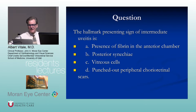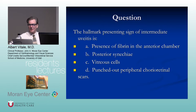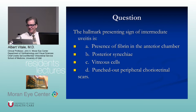The hallmark presenting signs of intermediate uveitis include vitreous cells, snowbanks, and peripheral chorioretinal lesions — it's a disease mostly of the vitreous and peripheral retina. In children, you can get anterior uveitis, but usually not with fibrin; fibrin would be more associated with B27-associated disease.